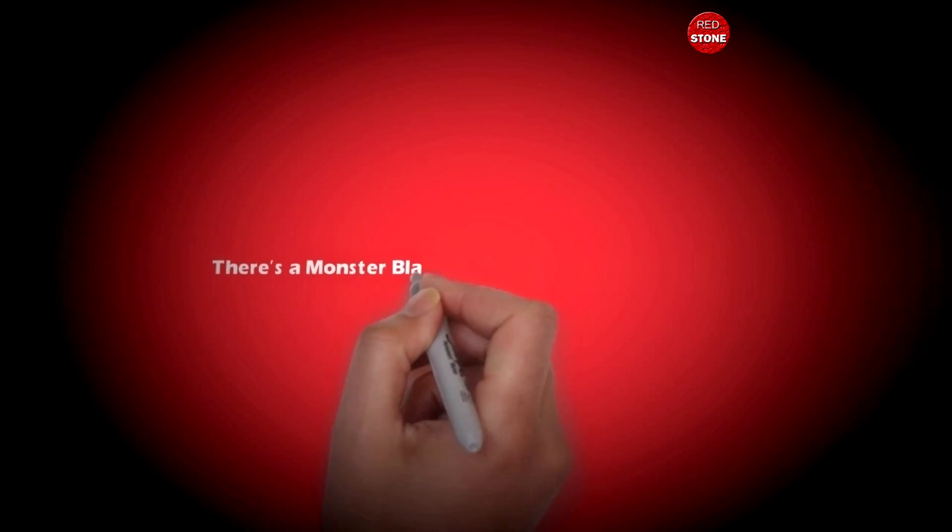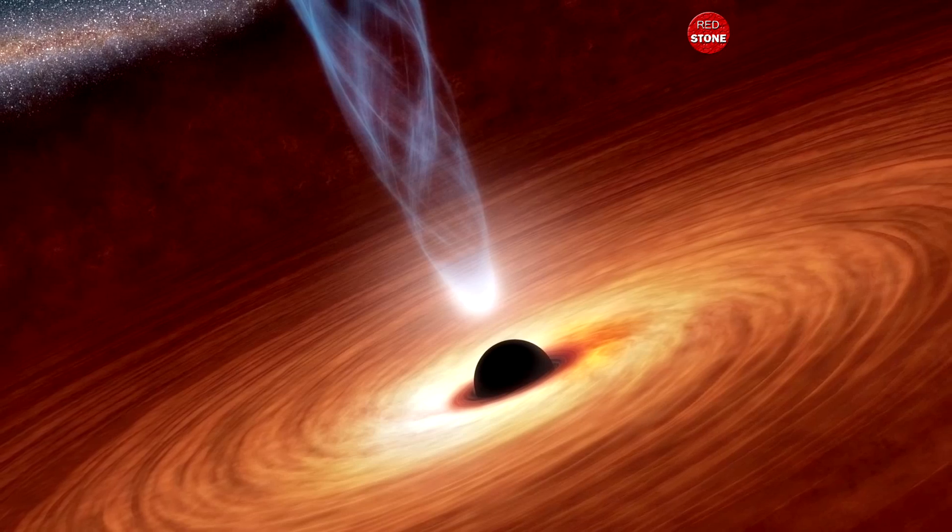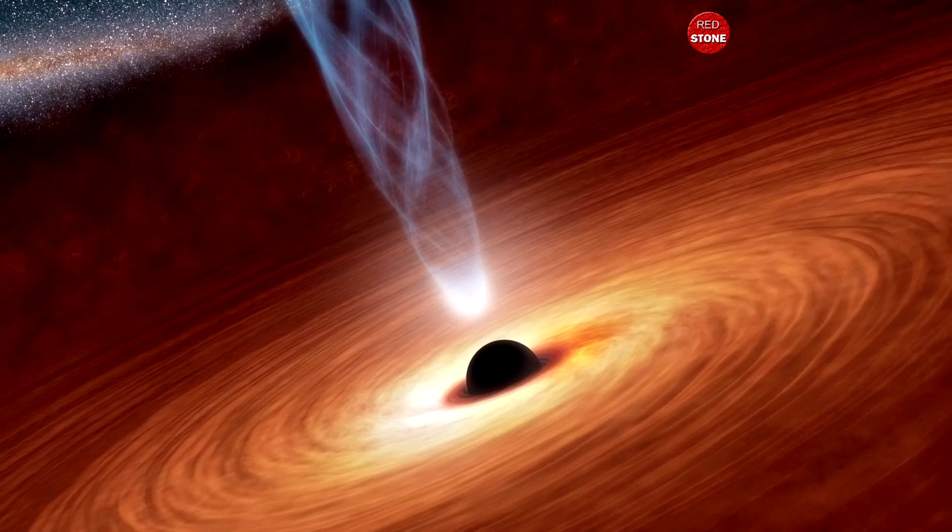4. There's a monster black hole in the galaxy's middle. Called Sagittarius A, the supermassive black hole weighs in at more than 4 million times the mass of the Sun.